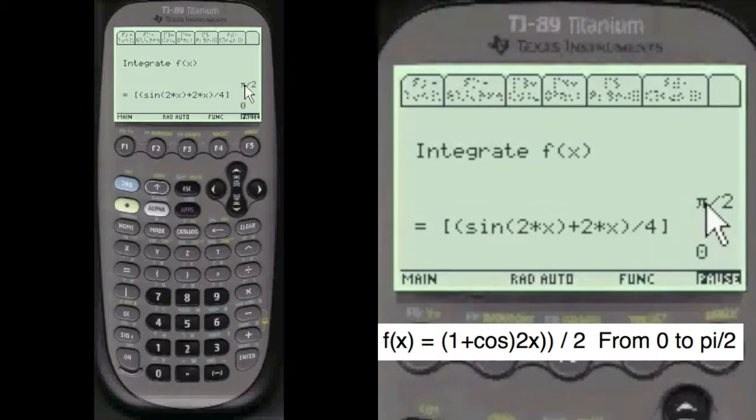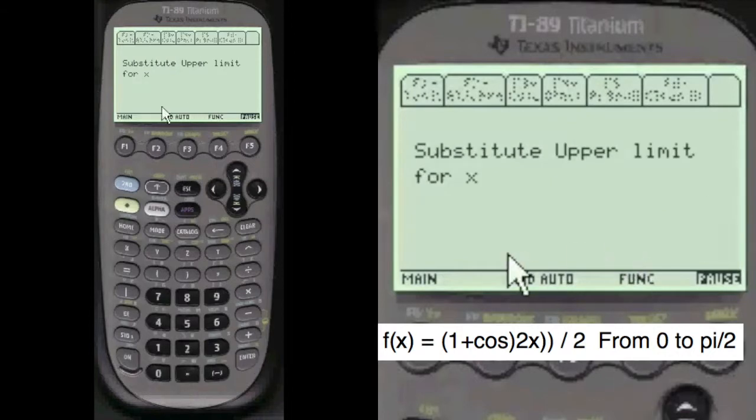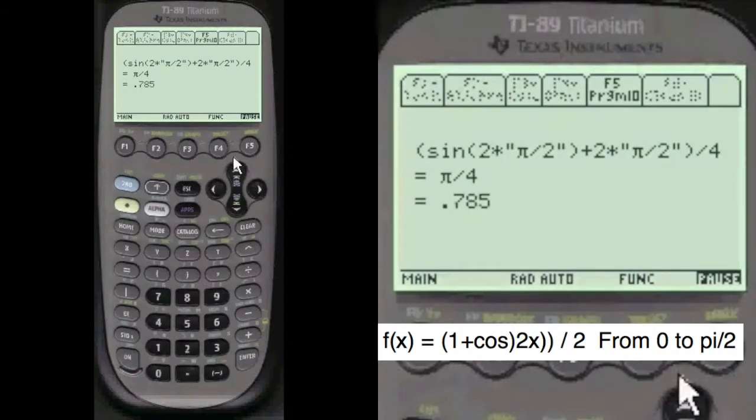And pi over 2 is the upper limit and the lower limit is 0. We substitute the upper limit for all of x's. Here we're substituting pi over 2 for x. We come up with pi over 4 or approximately .785.